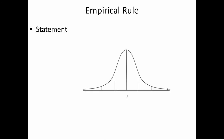Here's the statement of the empirical rule. Start with a normal PDF centered at mu. If we look at all the values within one standard deviation — where sigma is the population standard deviation — 68% of the population lies within one standard deviation of the mean.